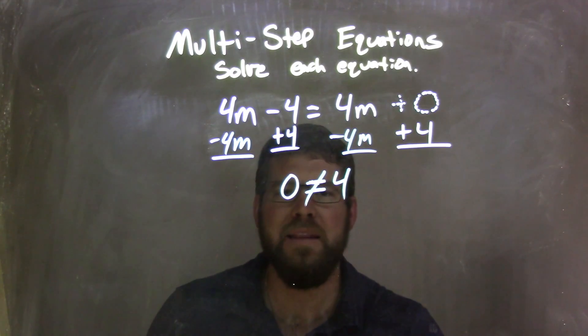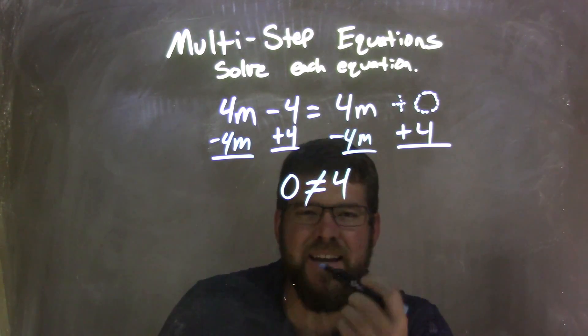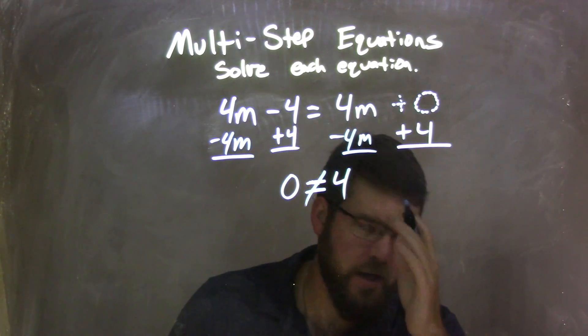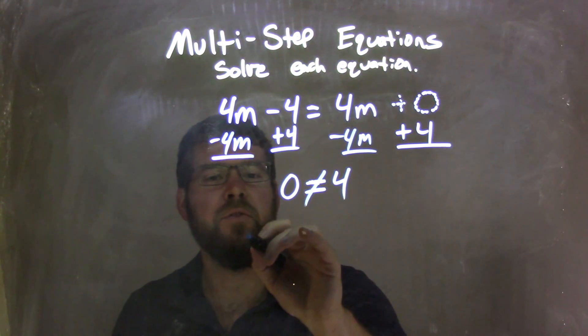So what happens when you're solving these and you come down to a statement that's not true? A number equals another number, and they're not really equal, right? 0 is not equal to 4, last time I checked. When that happens, our answer is no solution.